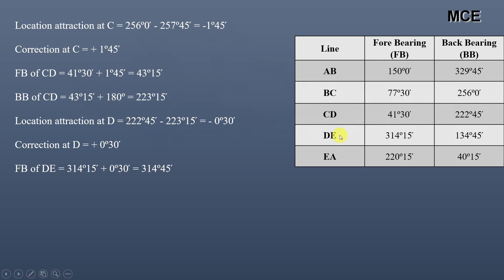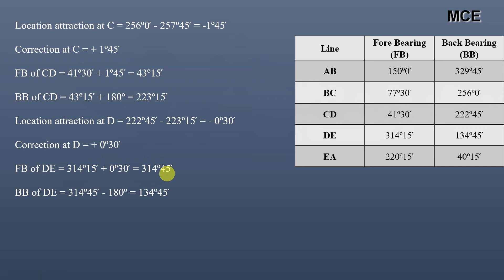The correct fore bearing of line DE is the observed fore bearing of line DE, which is 314°15', plus the correction of 0°30'. So the correct fore bearing of line DE equals 314°45'. The correct back bearing of line DE equals 314°45' minus 180 degrees — because the fore bearing is greater than 180 degrees, the back bearing equals the fore bearing minus 180 degrees. So the correct back bearing of line DE is 134°45'.